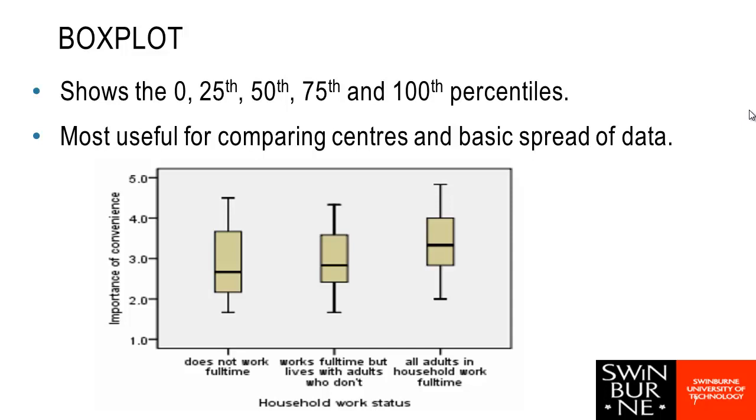In this example here, I have graphed some Likert scale scores. We can see the title there, importance of convenience, and then my three different categories of person works full-time, does not work full-time, works full-time but lives with adults who don't, or all adults in the household work full-time. If we look at the line in the center, here's our median here, here's our median here, here's our median here. We can see the median, and in fact kind of the box overall, the 25th percentile to the 75th percentile for this category, all adults in the household who work full-time, is a bit higher.